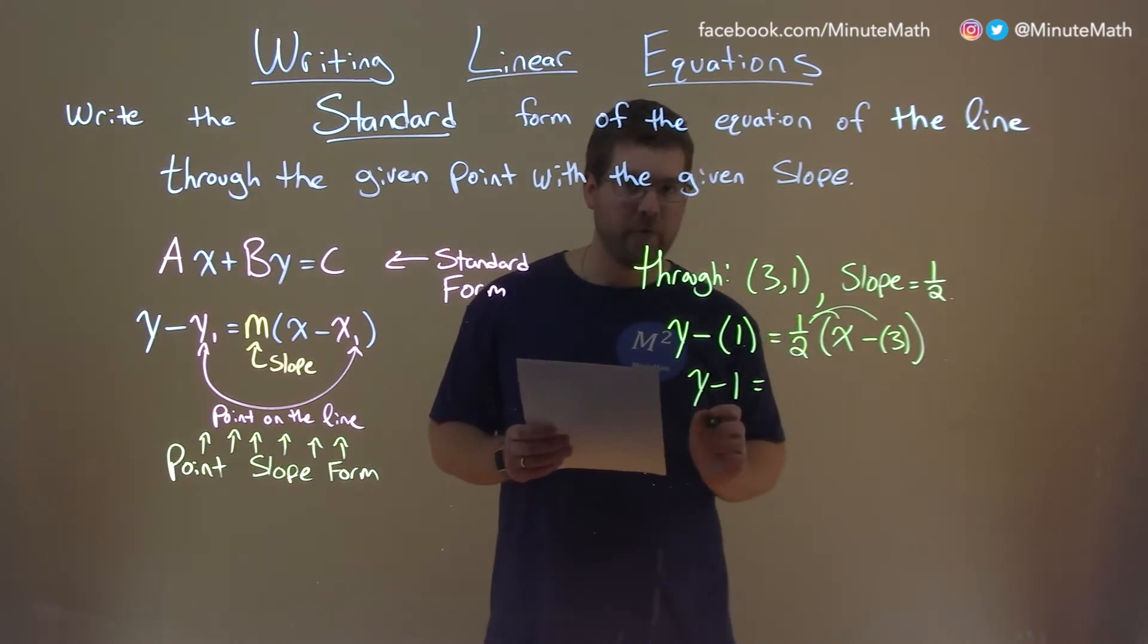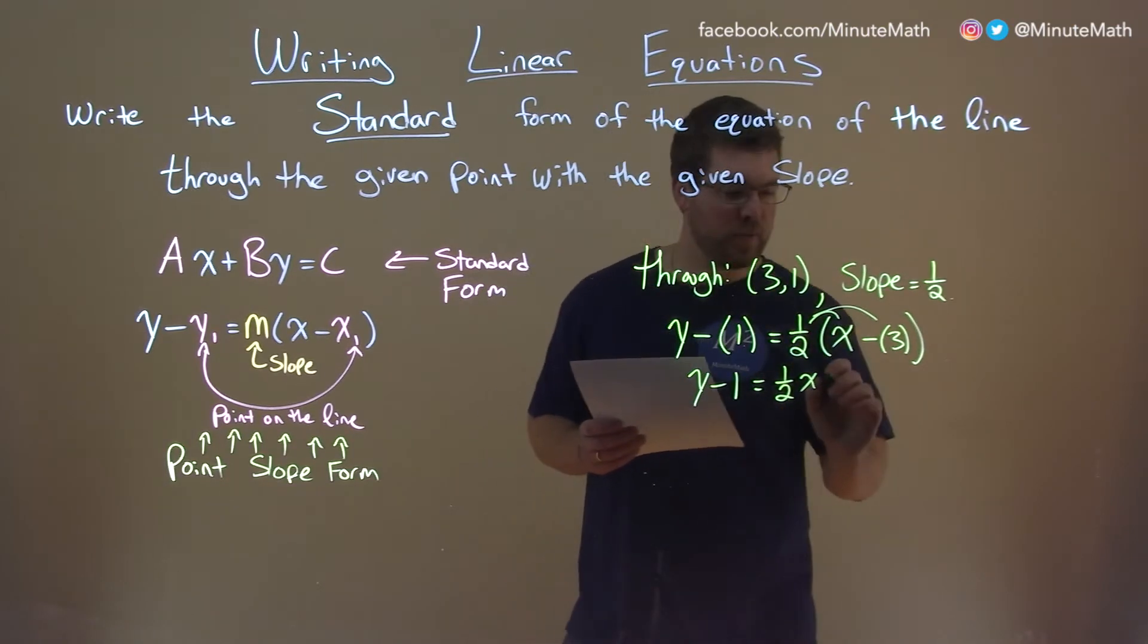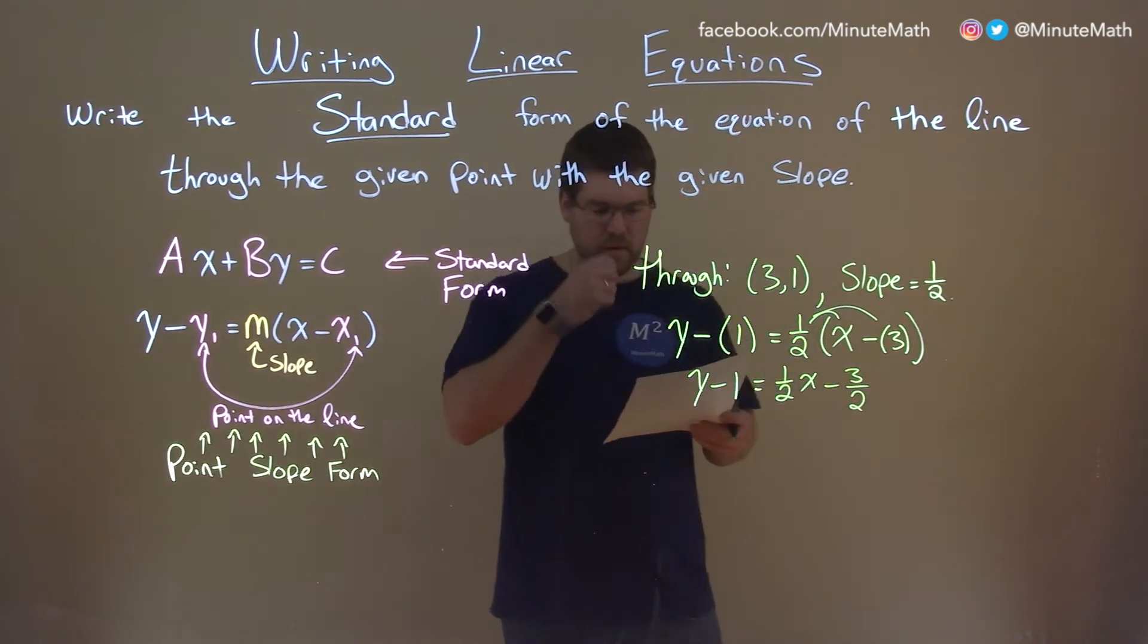Let's distribute this 1/2 here. 1/2 times x is 1/2x, and 1/2 times -3 is -3/2.